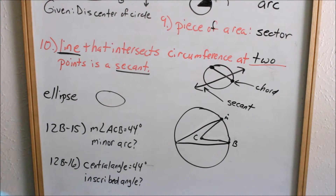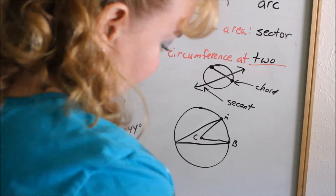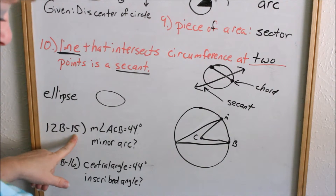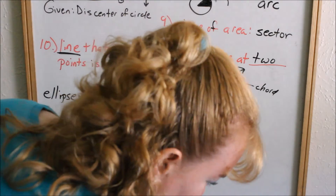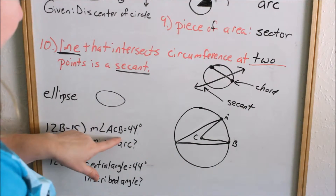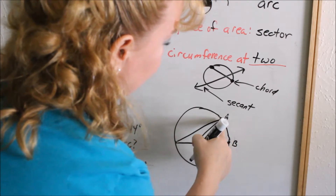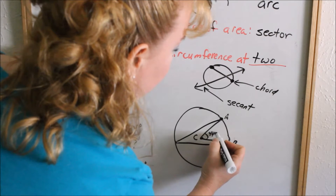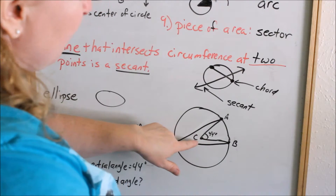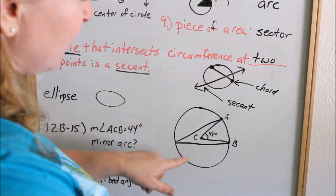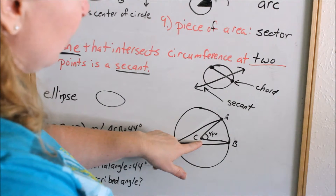Let's look at 12B number 15. You have this figure where C is the center of the circle. They tell you that the measure of angle ACB is 44 degrees. That angle, ACB, is called a central angle. You can remember it's called a central angle because it originates from the center of the circle. C is the center, and the angle is at the center, so it's a central angle.